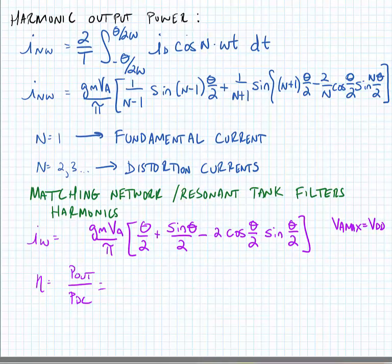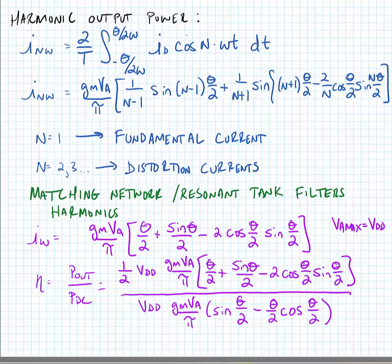Using these, we can find the output power and the DC power simply by multiplying the currents that we've just found by the voltages. We can estimate the drain efficiency, Pout divided by PDC. What we quickly discover is that the efficiency, or the drain efficiency, only depends upon the conduction angle.